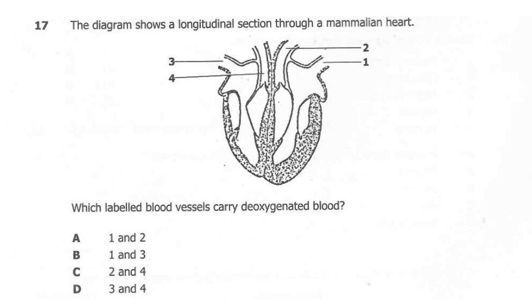Question 17. The diagram shows a longitudinal section through a mammalian heart. Which labelled blood vessels carry deoxygenated blood? A: 1 and 2. B: 1 and 3. C: 2 and 4. D: 3 and 4. The correct answer here is D: 3, which is the vena cava, and 4, which is the pulmonary artery. The vena cava and pulmonary artery are the ones which carry deoxygenated blood, found on the right side of the heart.